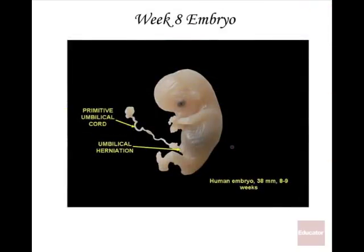A week-eight embryo is about two months into the process. This image is bigger than actual size — a week-eight embryo is only about a few centimeters, close to an inch long — typically before a woman is visibly showing. This particular example may have been from a spontaneous abortion, preserved through plastination. You can see a very early umbilical cord entering the body; it's about 38 millimeters or 3.8 centimeters.